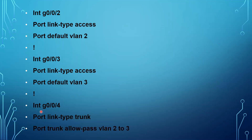The third step is to make the link between the two switches a trunk. On the trunk interface, type 'port link-type trunk'. In Huawei, you have to specify which VLANs are allowed to pass through the trunk: 'port trunk allow-pass vlan 2 to 3'. This allows the two configured VLANs to pass through the trunk. After finishing the configuration, VLAN 2 can communicate with VLAN 2, and VLAN 3 with VLAN 3 — but VLAN 2 cannot communicate with VLAN 3 yet, because we haven't configured a layer 3 device.